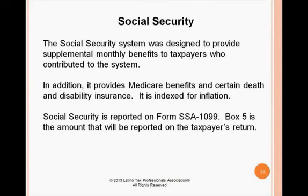Social Security was designed to provide supplemental monthly benefits to taxpayers who contributed to the system. It also provides Medicare benefits and certain death and disability insurance, and is indexed for inflation. Social Security is reported on Form SSA-1099; Box 5 is the amount reported on the taxpayer's return. It is important to determine the percentage of Social Security benefits that will be taxable, as not all benefits received are taxable — formulas are in place based on other income received.